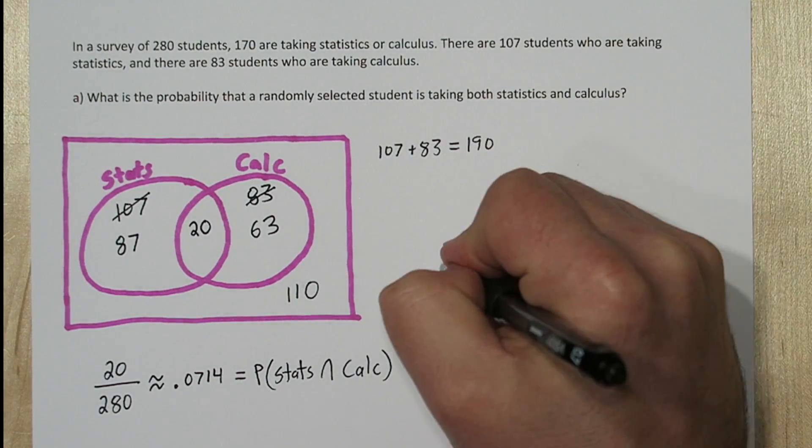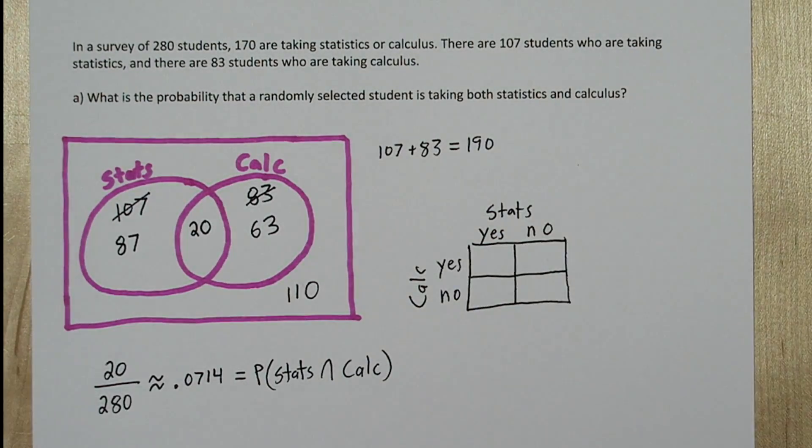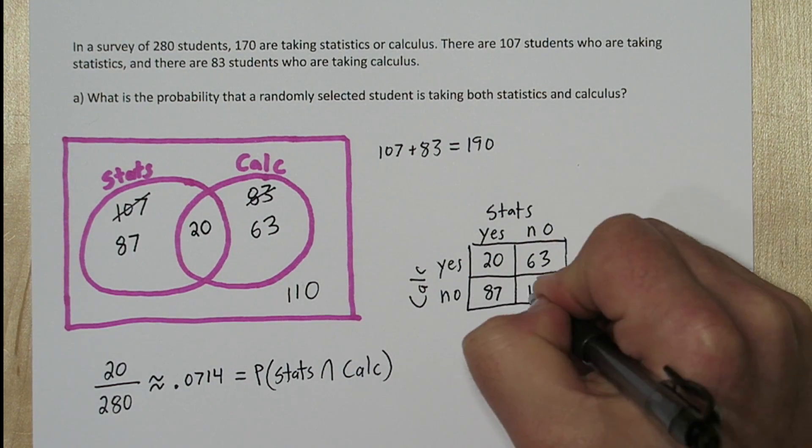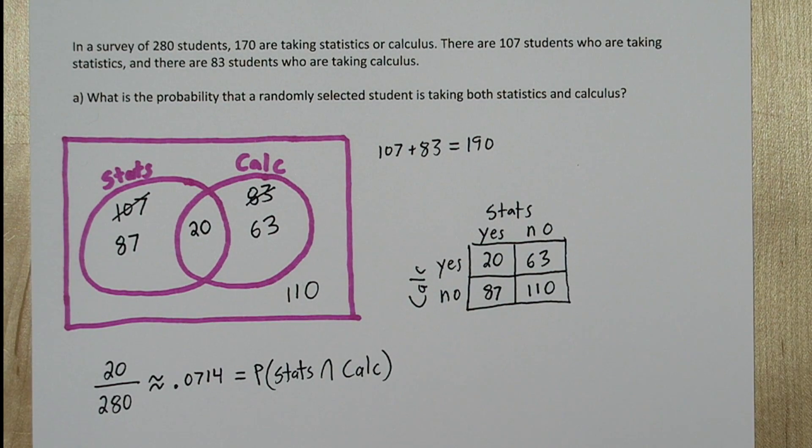Now some people prefer to use two-way tables instead of Venn diagrams. A two-way table has the same four values as the Venn diagram. You can use whichever one you're more comfortable with.